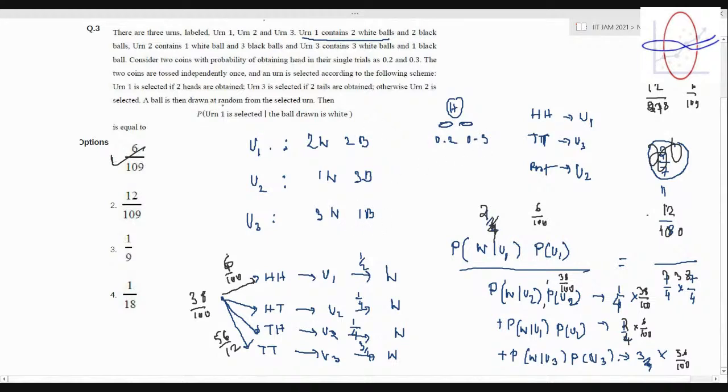And what is done is that we toss two coins with probability of HH 0.2 and 0.3. If HH is got we select U1, if HH is got we select U3, and if whatever rest is got we select U2. Then we randomly select a ball from the urn.